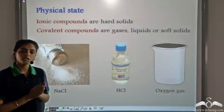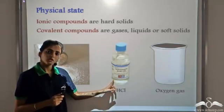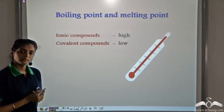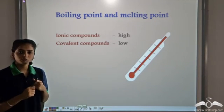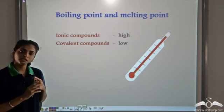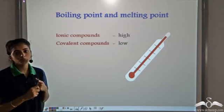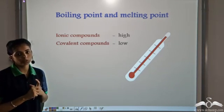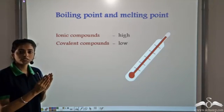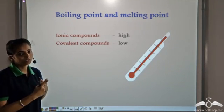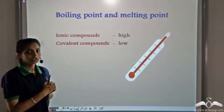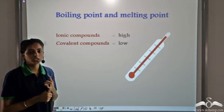Covalent compounds are generally liquids or gases, or at times soft solids. Since the ionic bond is stronger than the covalent bond, the melting point and boiling point of ionic compounds is high, and the melting point and boiling point of covalent compounds is low. As the electrostatic forces of attraction are very high, in order to break the bonds, the melting point and boiling point of ionic compounds is high. Since the intermolecular attractions are weak, the melting point and boiling point of covalent compounds is low.